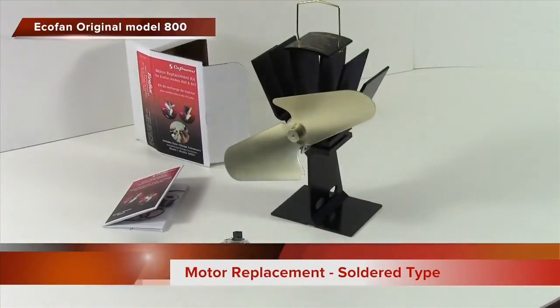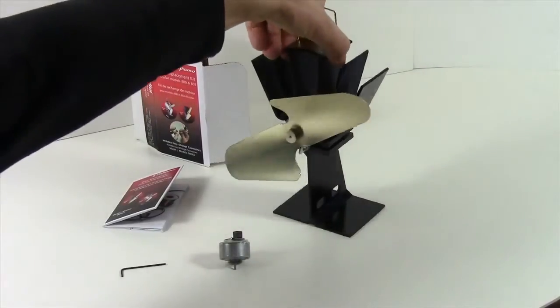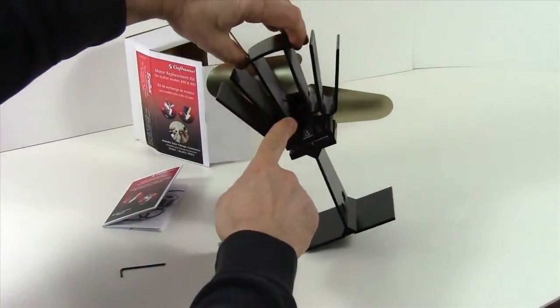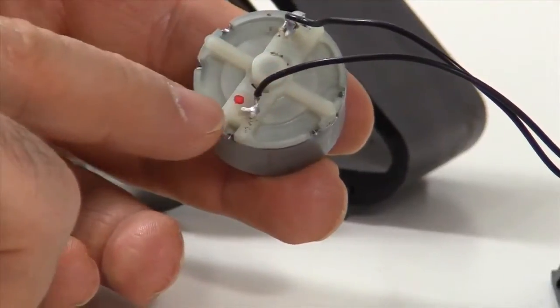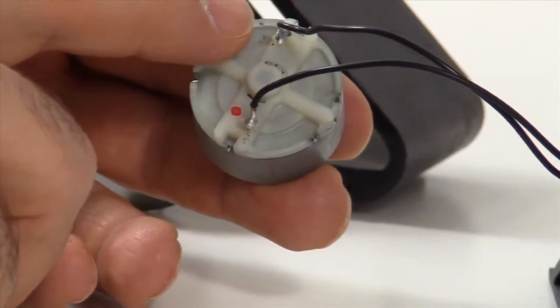Today we are replacing the motor on an EcoFan model 800. This procedure is valid if the back of your motor looks like this. We can see that one wire is connected to a terminal with a red dot and the other black wire is connected to a terminal that's unmarked.